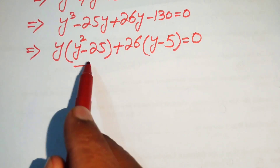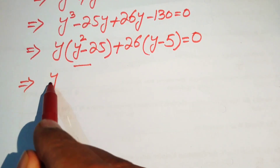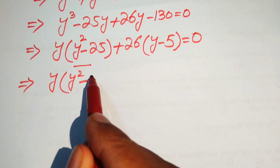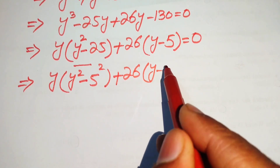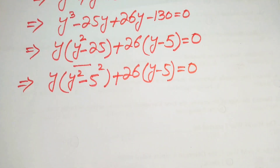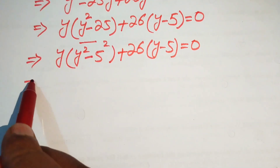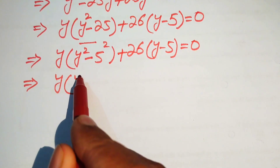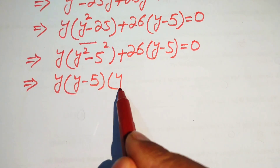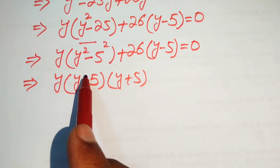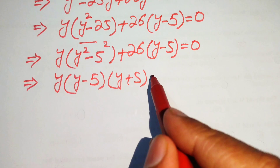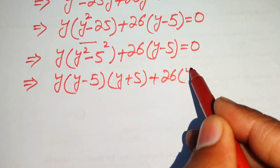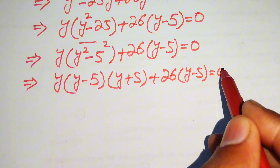We rewrite this term as y times (y squared minus 25) plus 26 times (y minus 5) equals 0. We write 25 as 5 squared and use the square difference identity: a squared minus b squared equals (a minus b)(a plus b). So we have y times (y minus 5)(y plus 5) plus 26 times (y minus 5) equals 0.